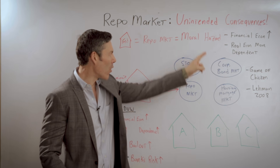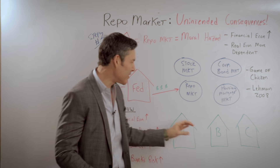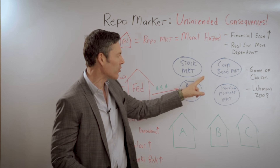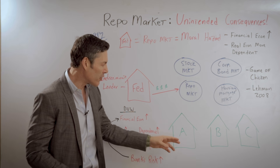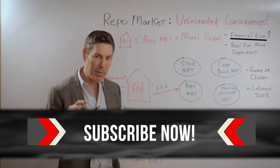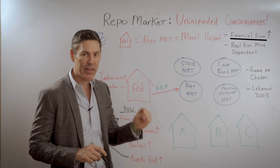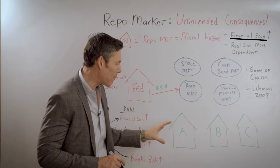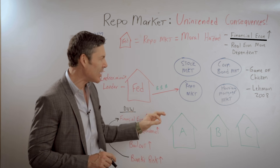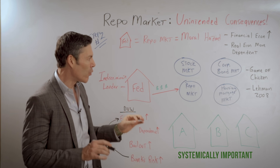They know the Fed is backstopping the repo market, the stock market, the corporate bond market, the housing and mortgage market. So they're going to continue to grow in size. This is going to increase the size of the financial economy. And the bigger the financial economy gets, the greater dependence the real economy has on that financial economy. It creates a game of chicken where the banks can almost force the Fed and the government to bail them out at any time because they're so systemically important to the real economy. This starts with moral hazard.